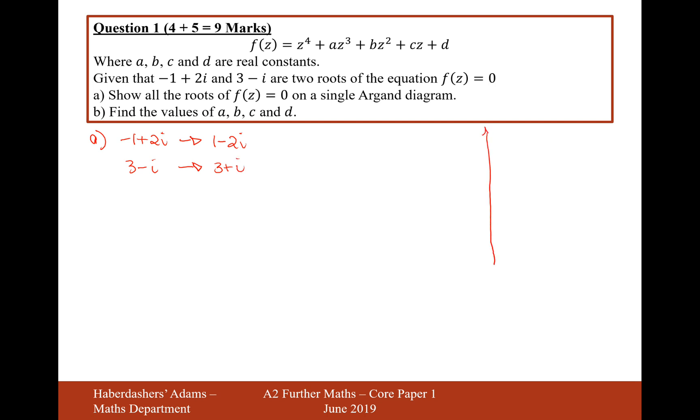Let's draw the diagram. This won't take long. Minus 1 plus 2i, so that'll be up here. Minus 1 minus 2i here, then 3 plus i, and then 3 minus i. There we are, that's the answer for part a.